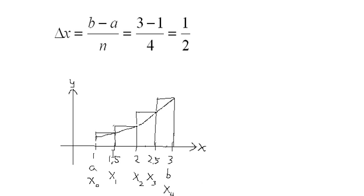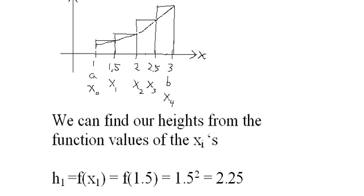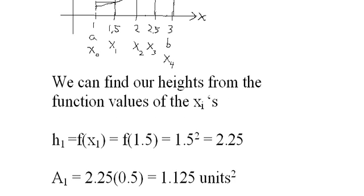Now, we know what the base is, how do we find the height? Well, we can find our heights from the function values of the x sub i's. In other words, if I want to find this first height, all I do is put 1.5 into the function. And which is just x squared. In other words, I square 1.5, and I find the height here. So this first rectangle has a width of 0.5, or 1 half, and a height of 2.25.